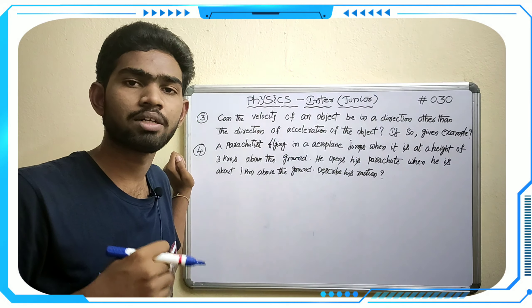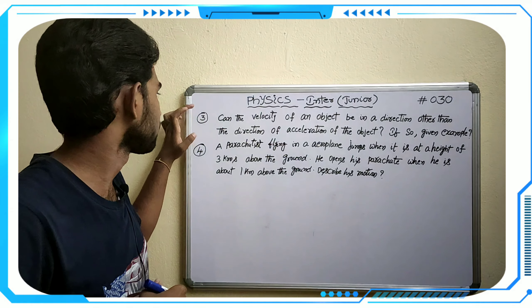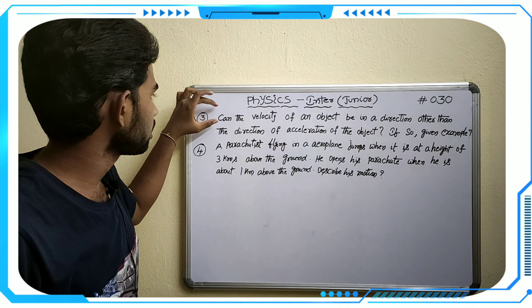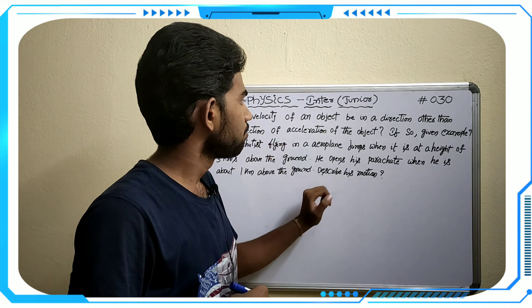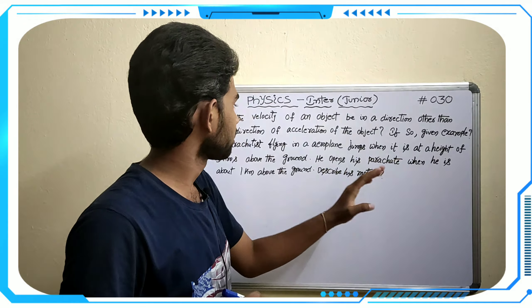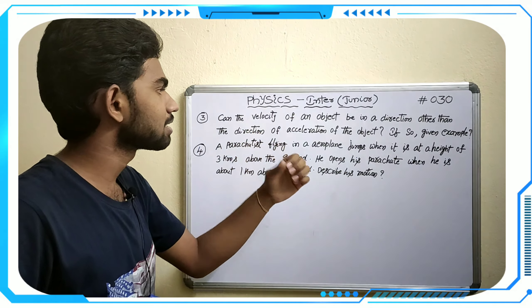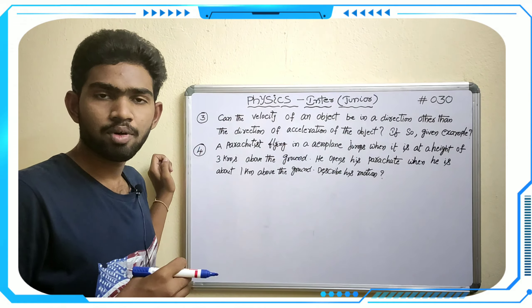Without further delay, do subscribe to my channel and click on the bell icon and select all options to get notified for every video upload. The third question is: can the velocity of an object be in a direction other than the direction of acceleration of the same object?